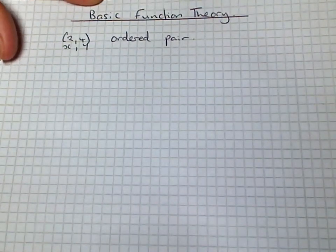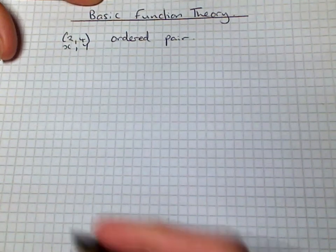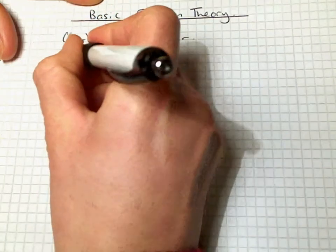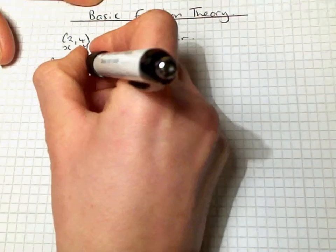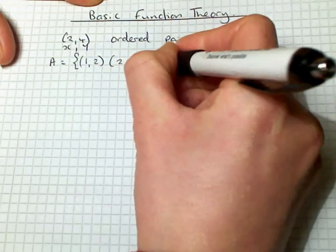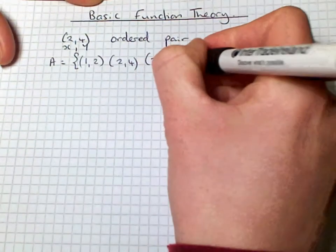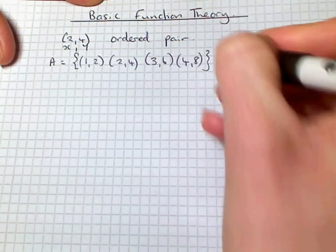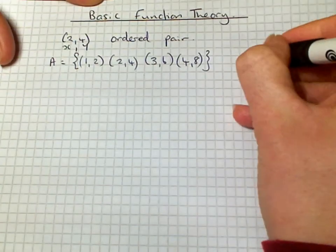If we take a set of such ordered pairs, for example if we take the set A and we take ordered pairs such as (1, 2), (2, 4), (3, 6), and (4, 8), all together they are known as a relation.